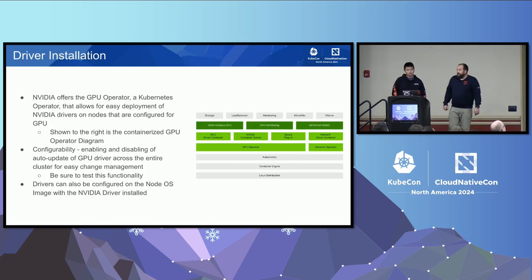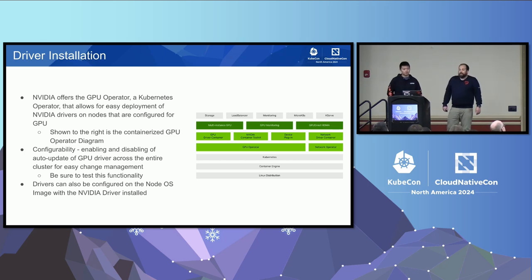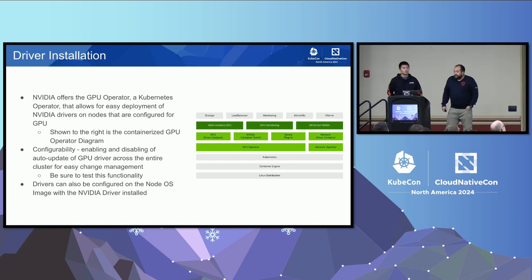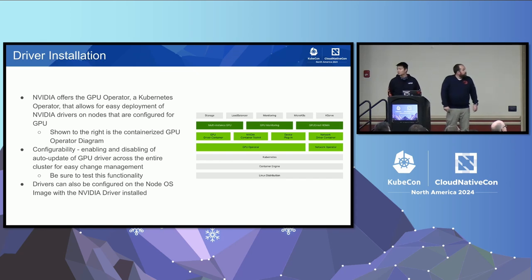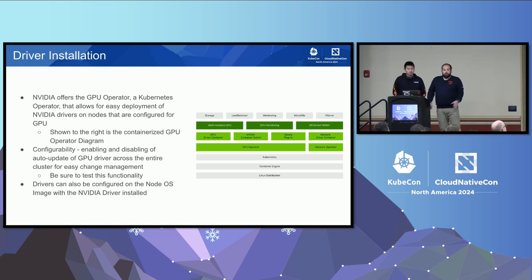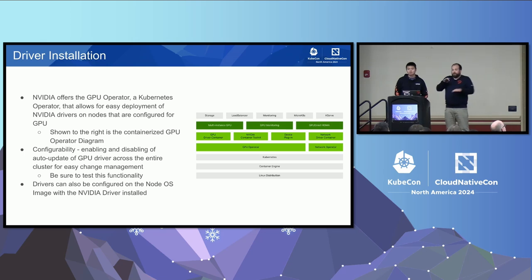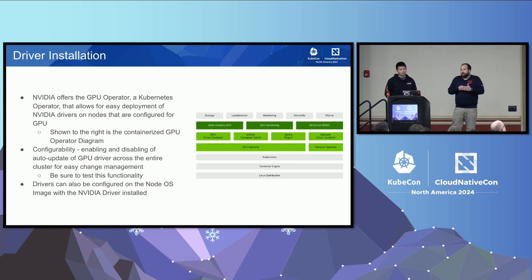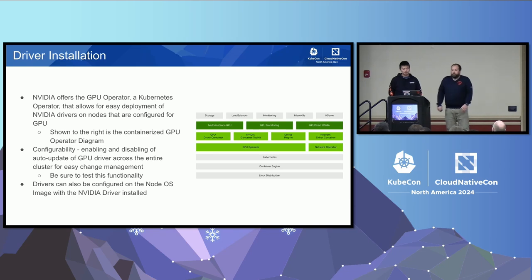Going into some of that complexity, we're going to talk about drivers. NVIDIA offers the GPU Operator — a Kubernetes operator that allows for easy deployment of NVIDIA drivers on nodes configured for GPUs. An asset provided from NVIDIA shows the stack. One of the really neat aspects is that this is a Helm chart deployment on your Kubernetes cluster that deploys all the GPU drivers, toolkits, device plug-ins, and monitoring. It is like a one-step install.